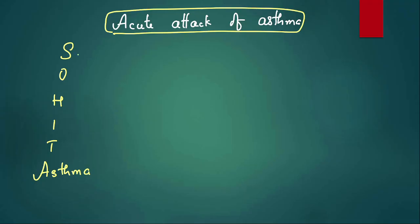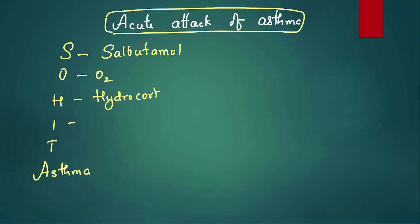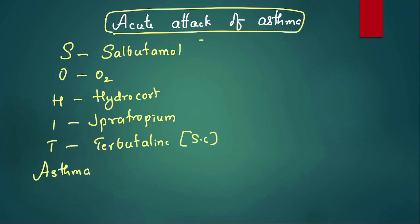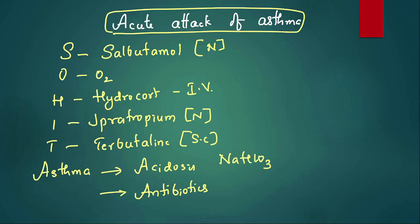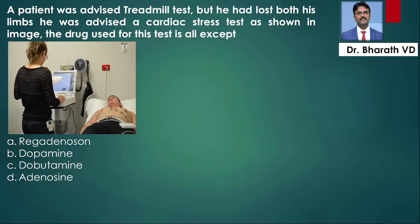The mnemonic for drugs in acute asthma attack or status asthmaticus is SO HIT ASTHMA: S — salbutamol by nebulization; O — oxygen, humidified 100%; H — hydrocortisone intravenously, because it increases beta response; I — ipratropium, a SAMA; T — terbutaline by subcutaneous route. A — treat acidosis with sodium bicarbonate; and start antibiotics because infections can trigger asthma.